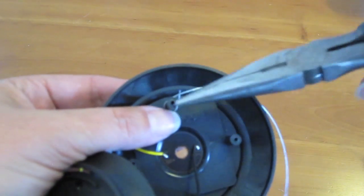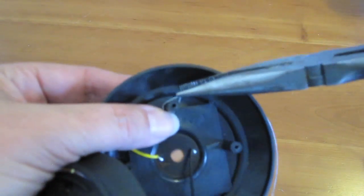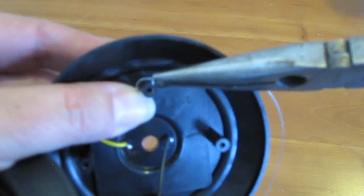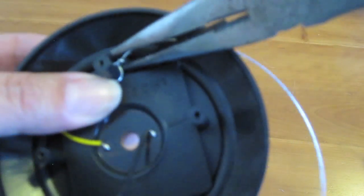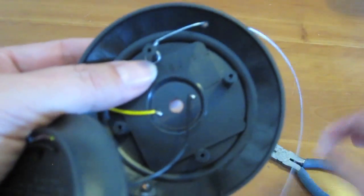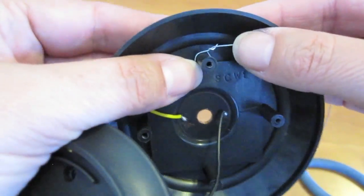Then I just take the needle nose pliers. It helps to pull the wire under first—I don't know why that was easier—but when I pull the wire under, it's a lot easier to get through. So now I've got that one wrapped around really well.